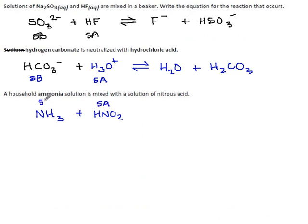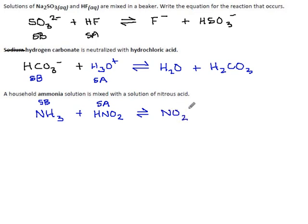That makes ammonia our strongest base. Normally bases have a negative charge, which is part of why they attract hydrogen ions — but ammonia is one of the exceptions. It's highly polar with a lone pair on the nitrogen that is strongly attractive to hydrogen ions, so it can act as a base without an actual negative charge. Afterwards, HNO₂ gives away a hydrogen to become the nitrite ion NO₂⁻, and ammonia gains a hydrogen to become the ammonium ion NH₄⁺.